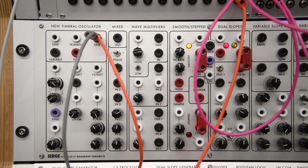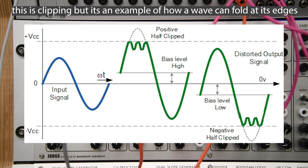What are wave multipliers? Wave multipliers are wave folders. I don't know why it's called multiplying — I guess you're multiplying the amount of waves per wave in a way. But visually, it makes more sense to call it a wave folder, because it folds the wave.